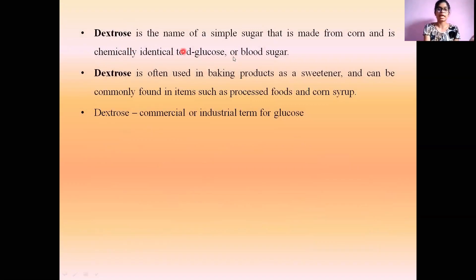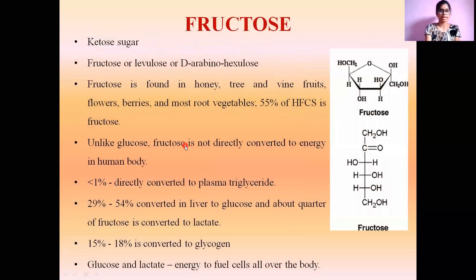Dextrose is the name of a simple sugar made from corn and is chemically very much identical to D-glucose or blood sugar. Dextrose is often used in baking products as a sweetener and can be found in items such as processed food, corn syrup, etc. The commercial name or industrial term for glucose is also referred to as dextrose.